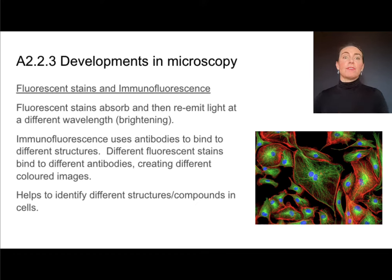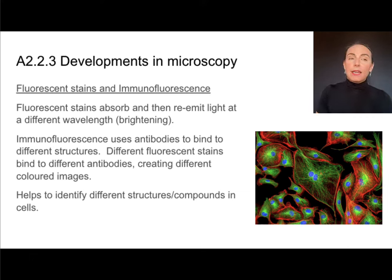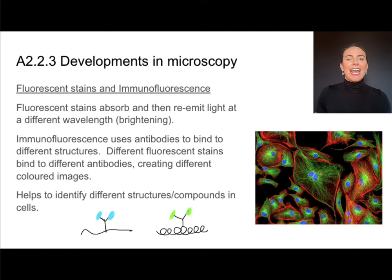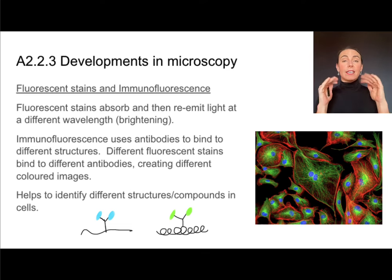This image utilizes fluorescent stains and immunofluorescence. Fluorescent means something absorbing light and re-emitting it at a different wavelength, which often brightens it. Immunofluorescence uses antibodies to bind to different structures — one type of antibody binds to one structure, a different antibody binds to a different structure. Different fluorescent stains stick to different antibodies due to different sticky regions, so you get a colorful image where different stains highlight different substances. It's really useful for identifying different structures and compounds in cells in a clear, colorful, visual way.